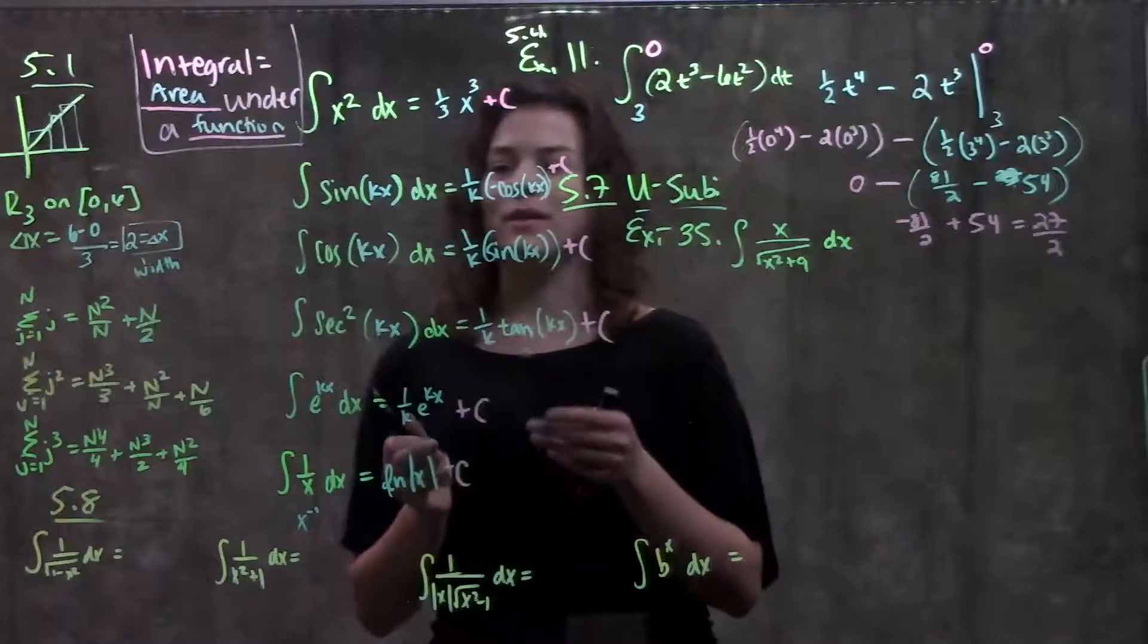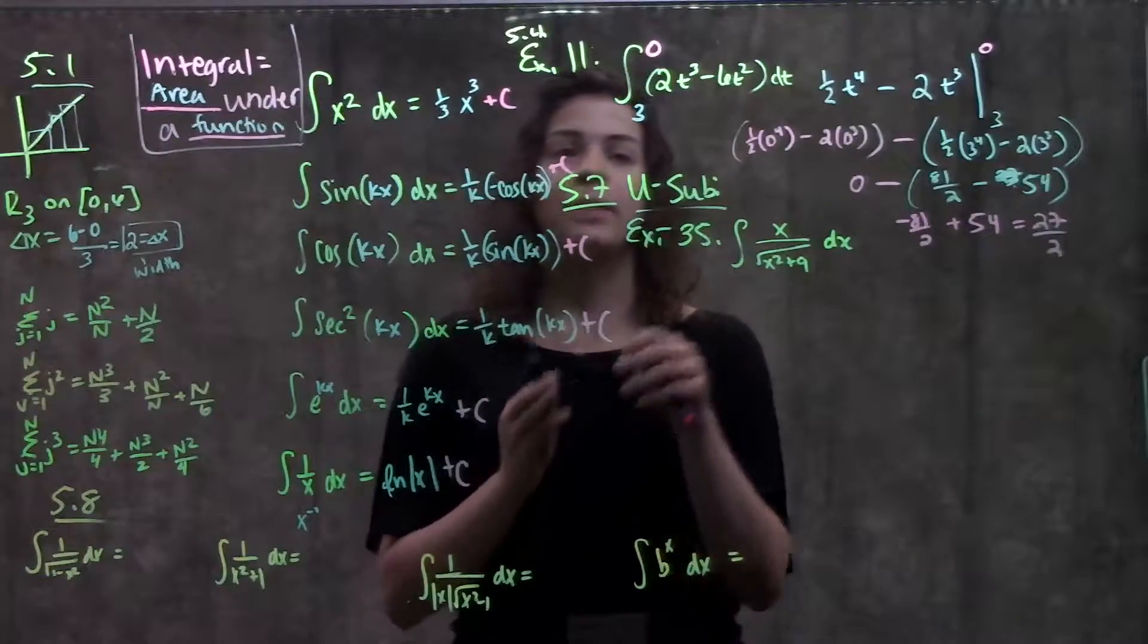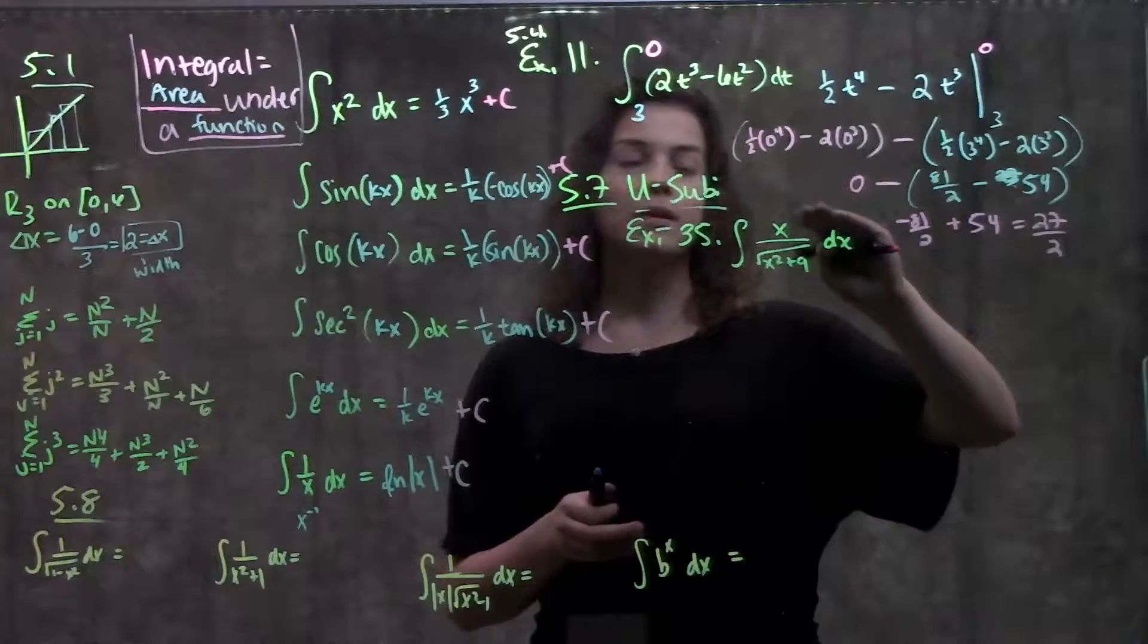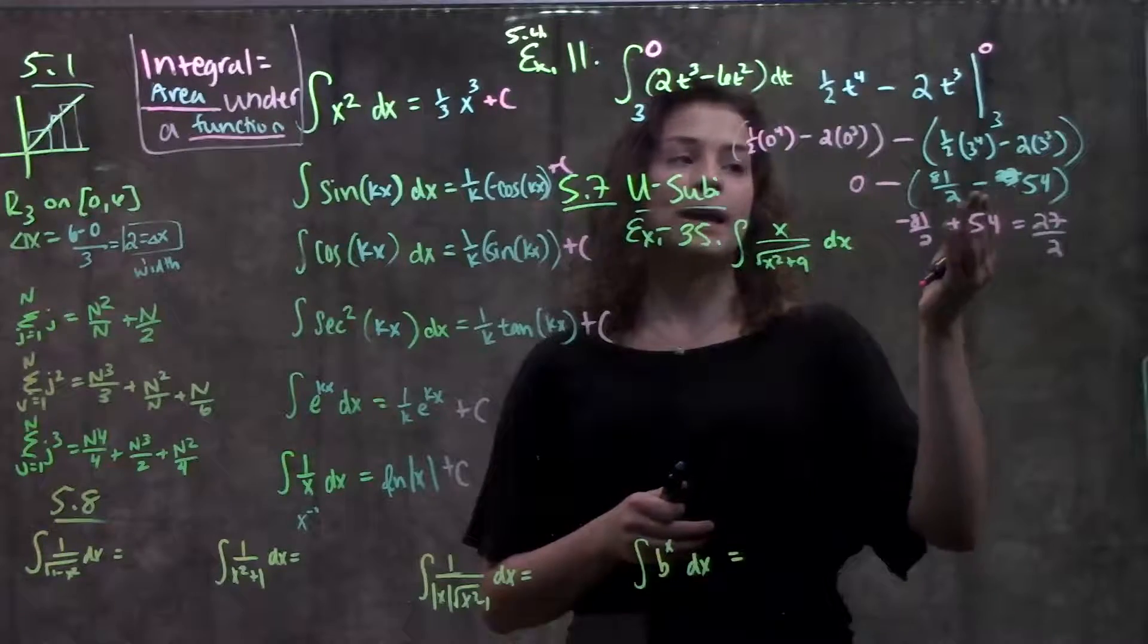So indefinite integrals, we take the integral and just add a plus c at the end. Definite integrals, we take the integral, we plug in our top number, and subtract whatever we get, the entire quantity, when we plug in our bottom number.